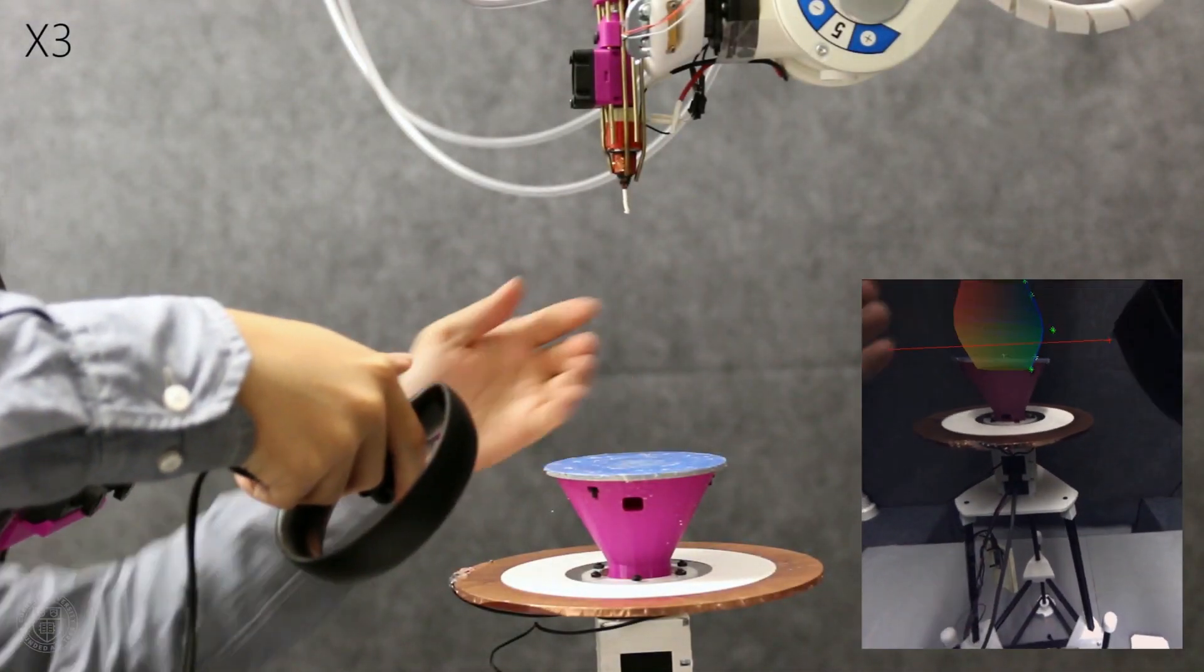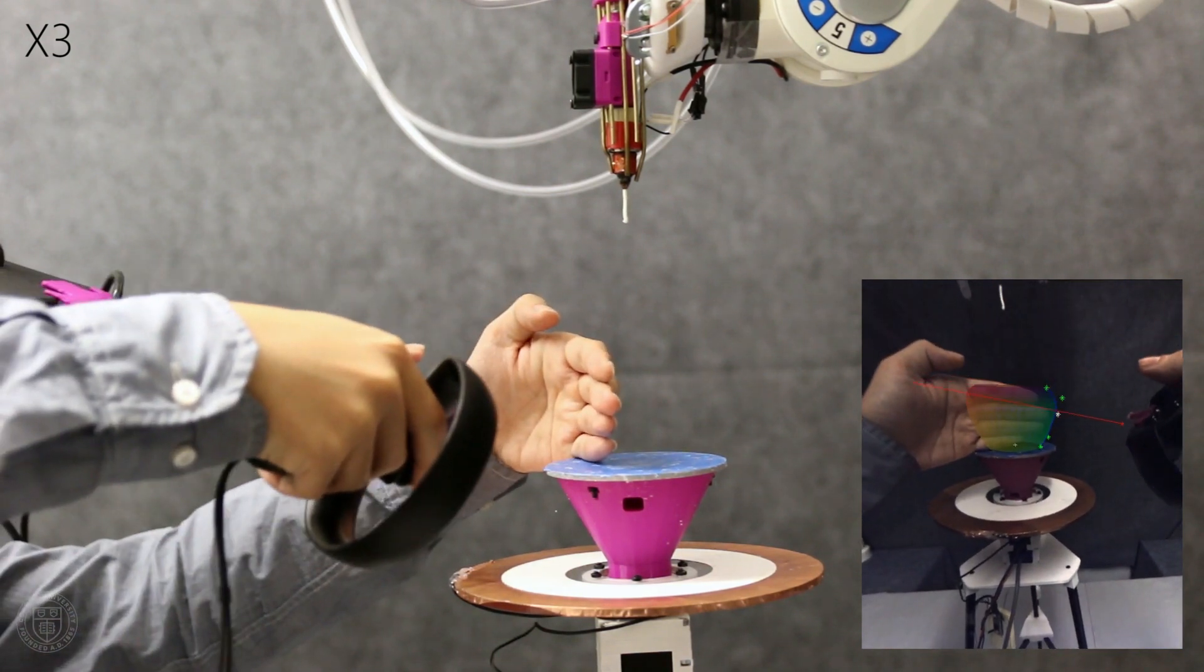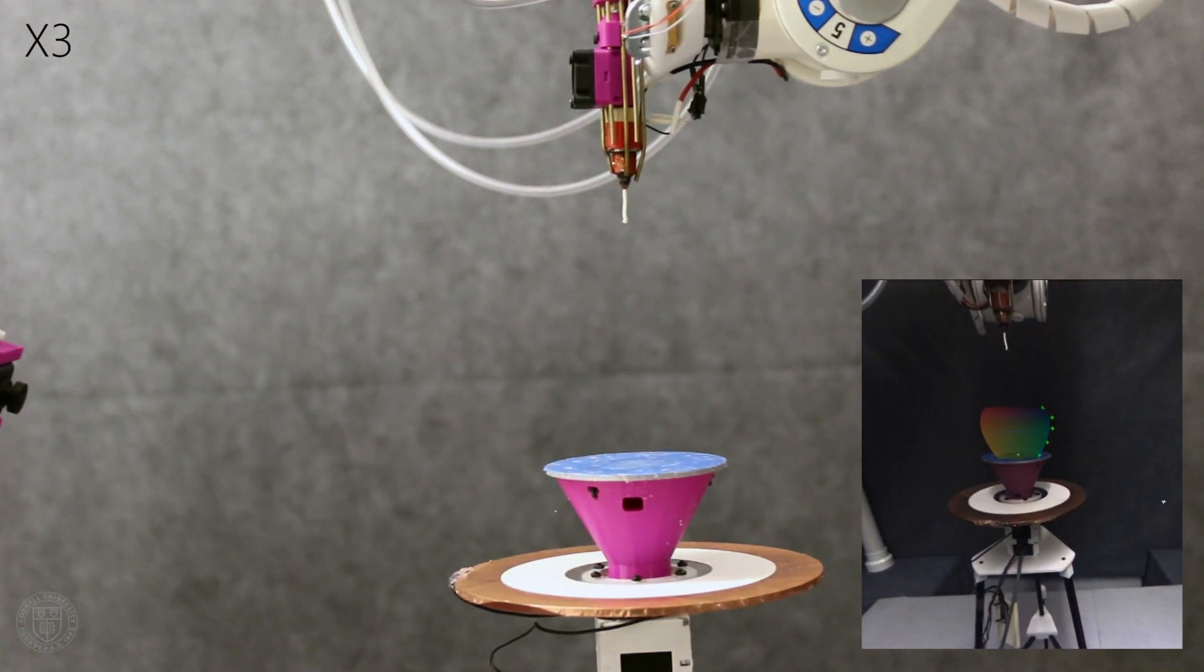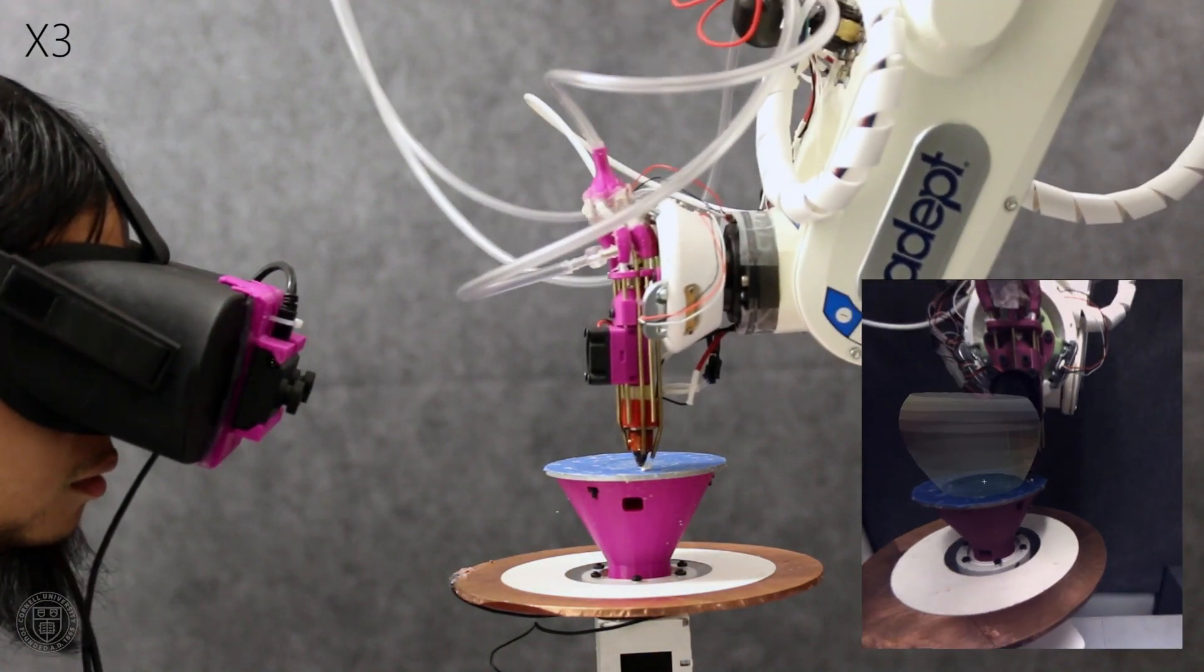We introduce ROMA, the Robotic Modeling Assistant, a system that allows users to design 3D digital models in augmented reality, while a robotic 3D printer fabricates the design at the same time in the same space.